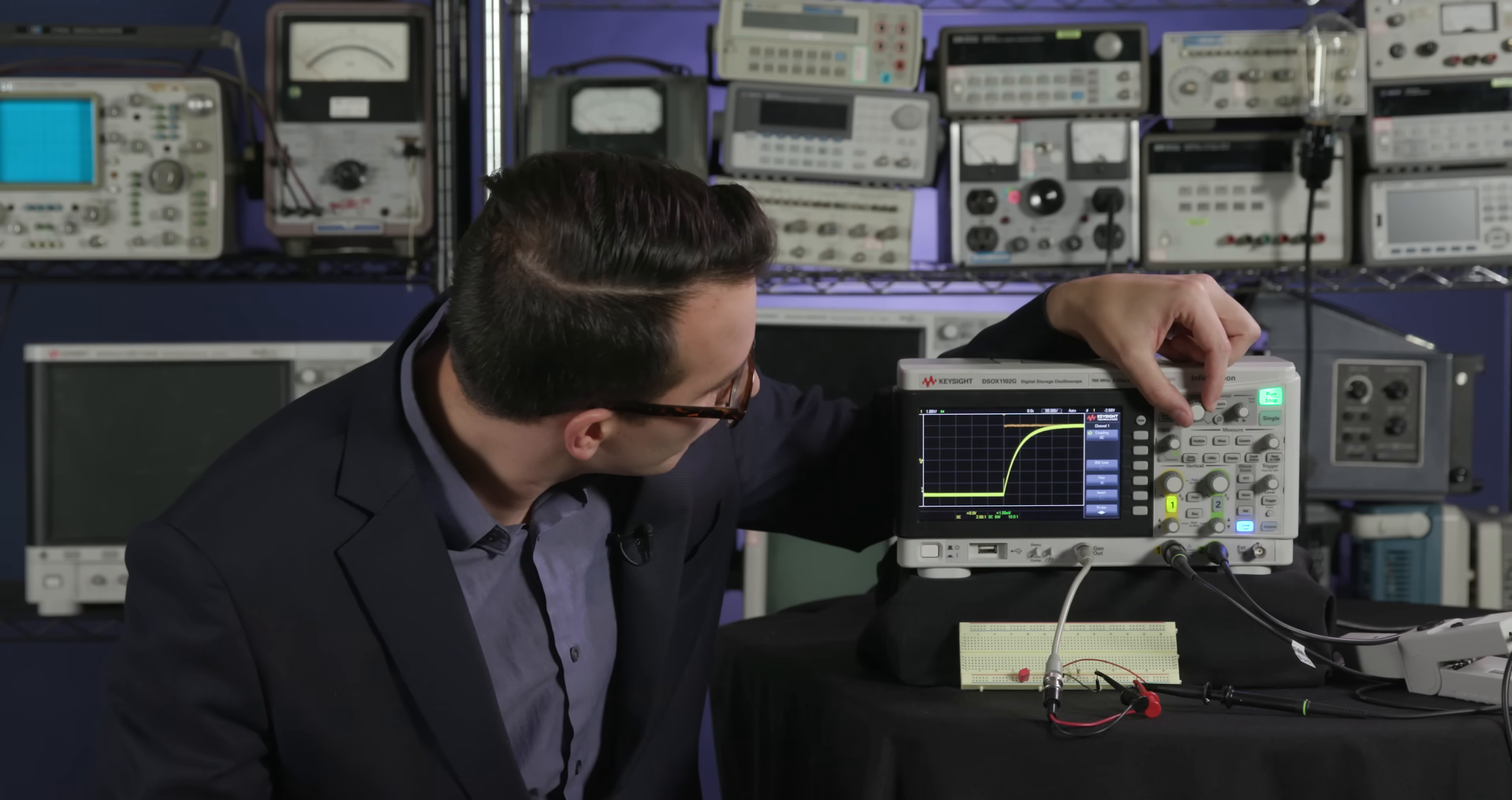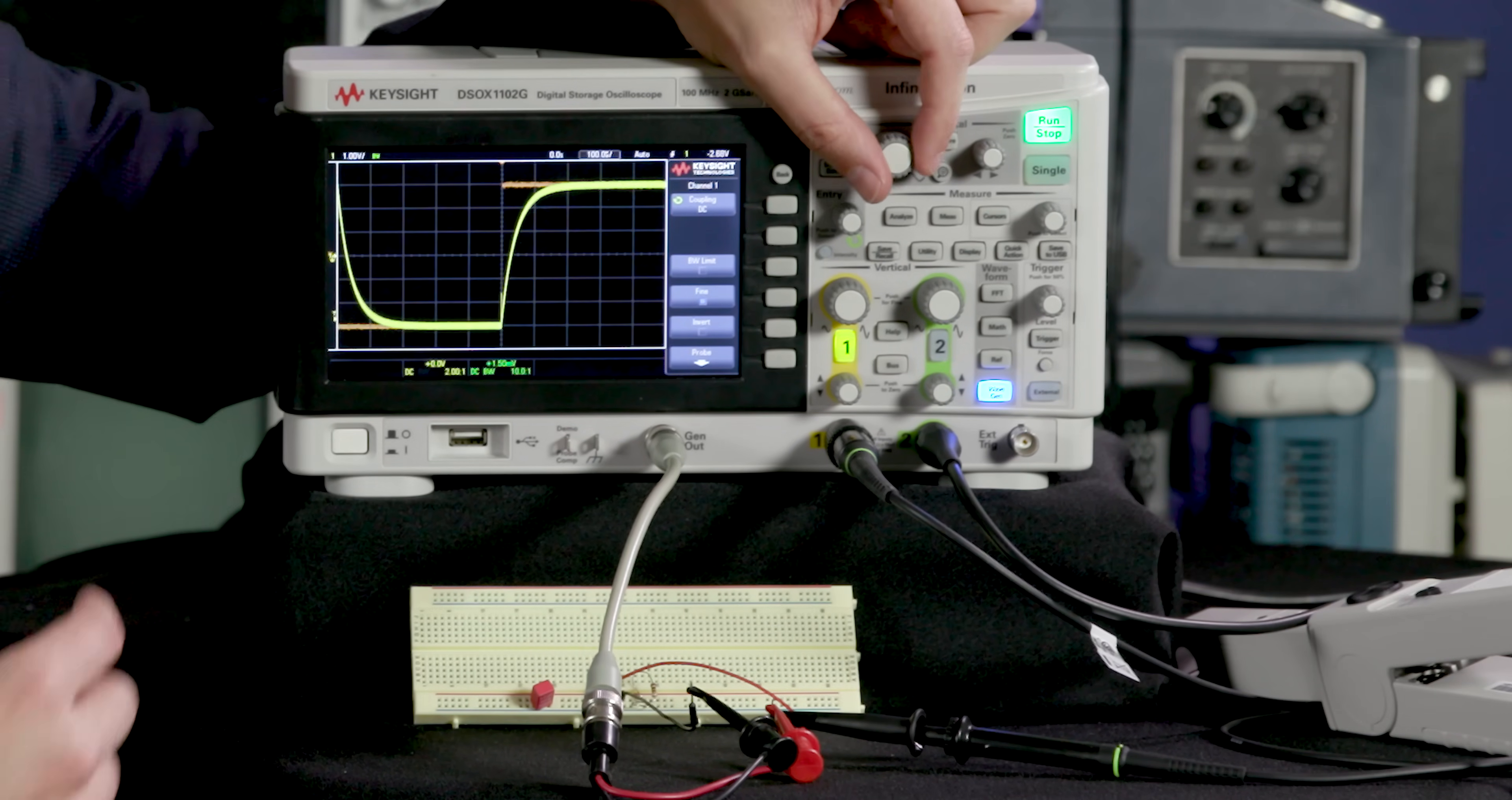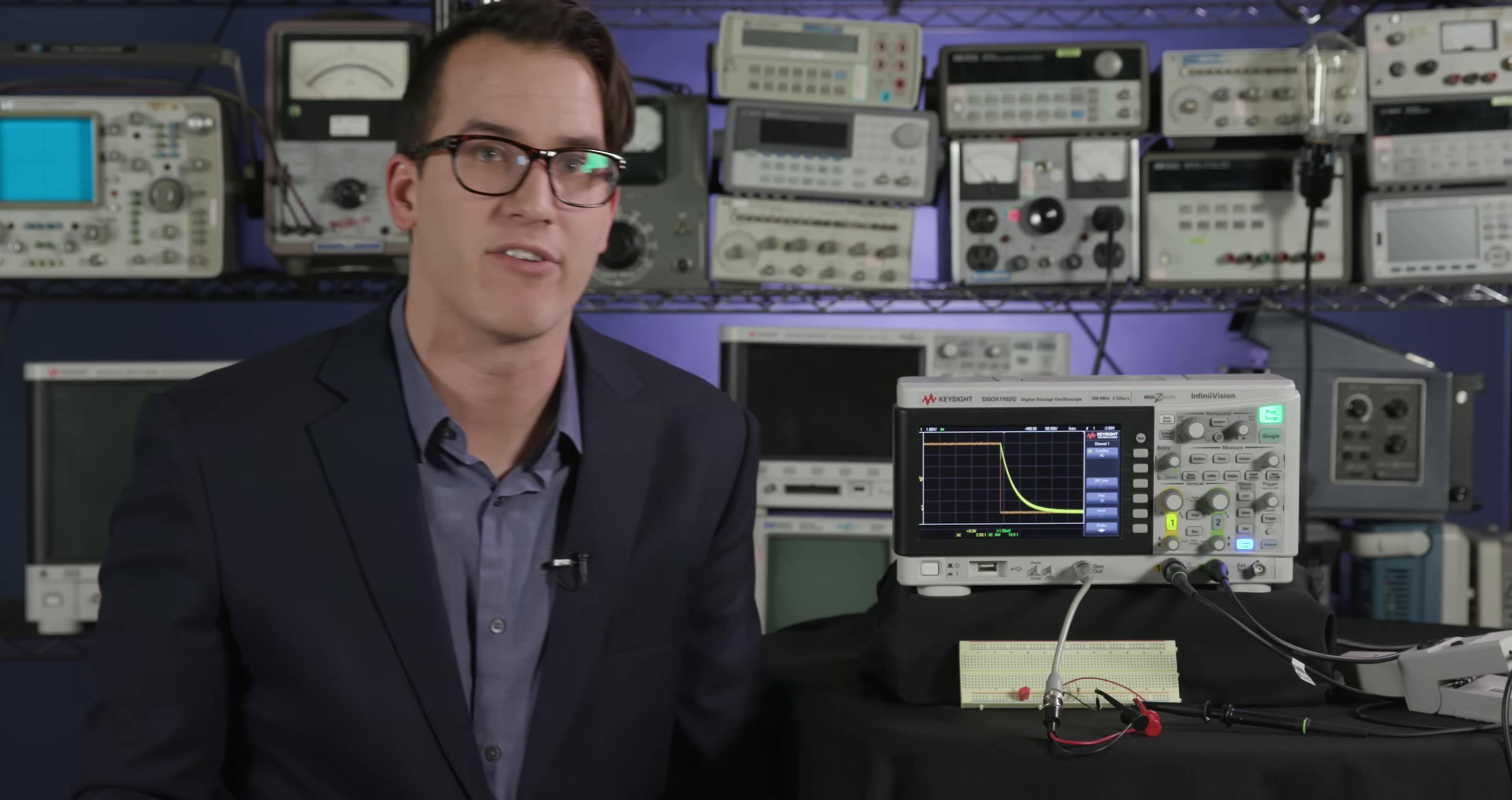And you can see if I zoom in here, in this region my capacitor is charging up, it's resisting that step up in voltage. Here my capacitor is starting to discharge, so all of that charge stored up when the voltage was high is slowly trickling out of my capacitor after my source voltage has already gone low.